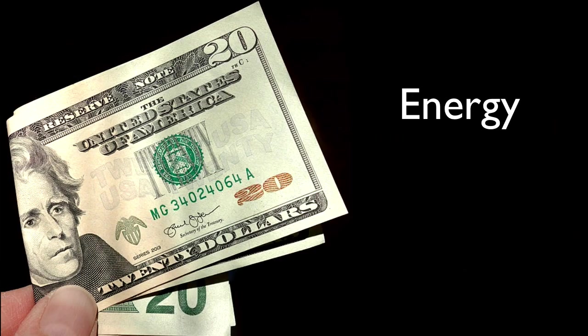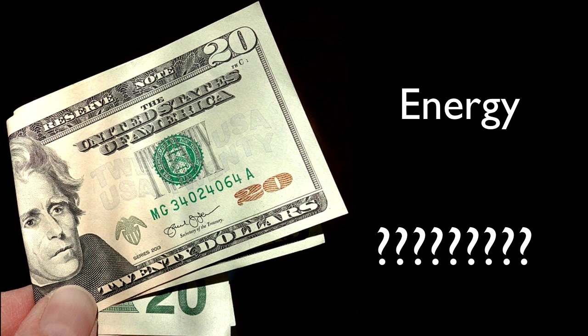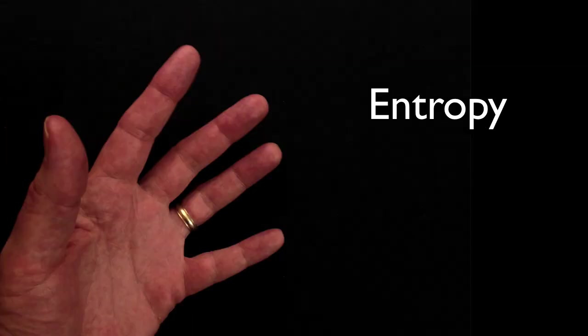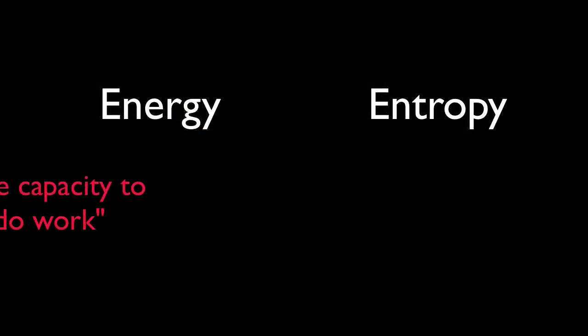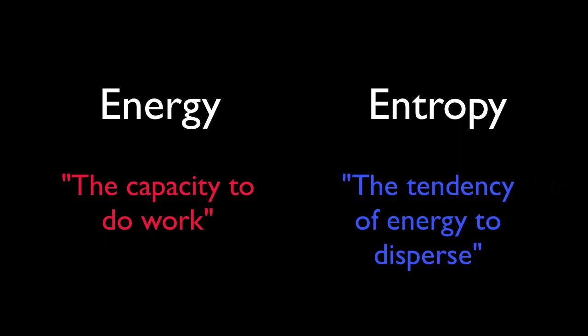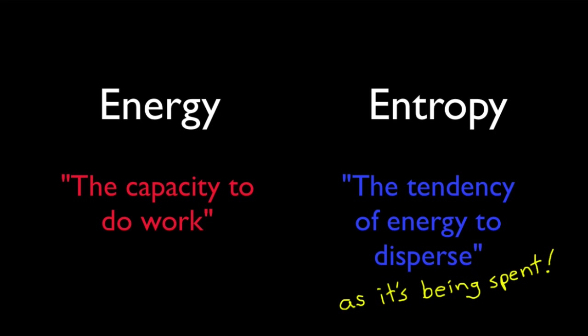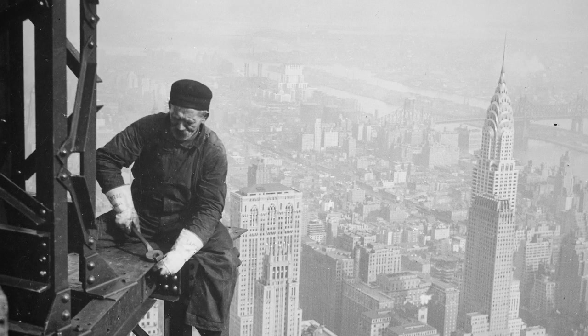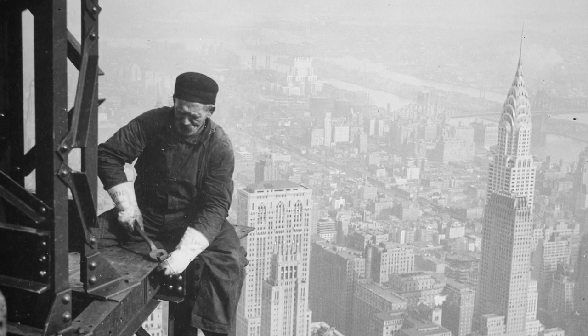Think of it this way: energy is like money — the more you've got, the more you can do. You may have a fat bank account, but what good is that if you never spend a dime? If energy is like money, entropy is like the spending of that money. It's great to have a lot of money, but things only start to happen once you start spending it. So entropy is not a measure of energy itself — it's more like a measure of the spending of that energy. And it's the spending of that energy that causes things to happen here in our physical universe.